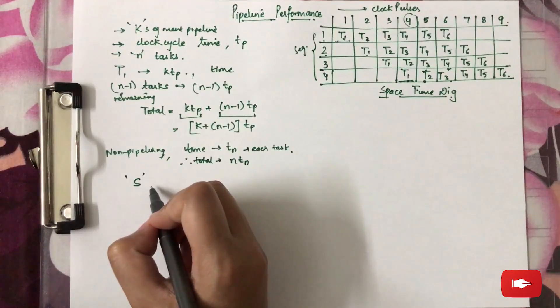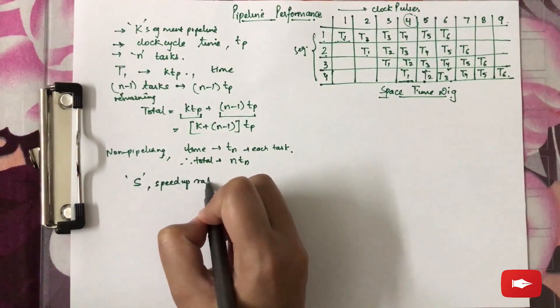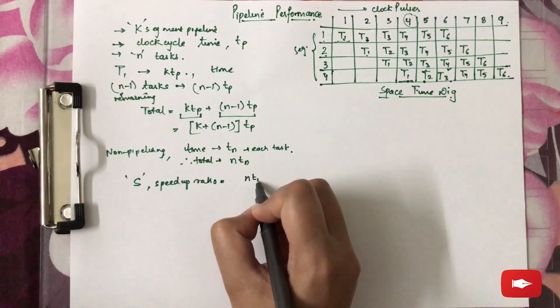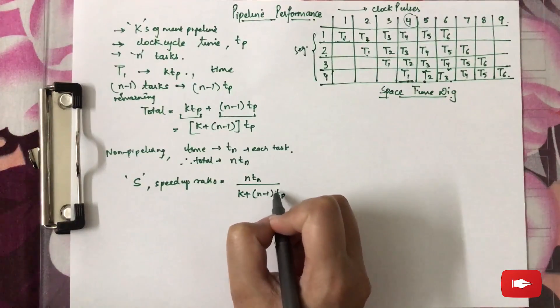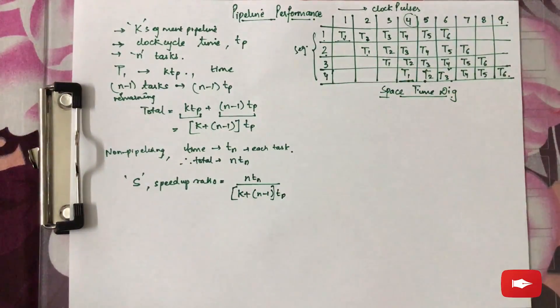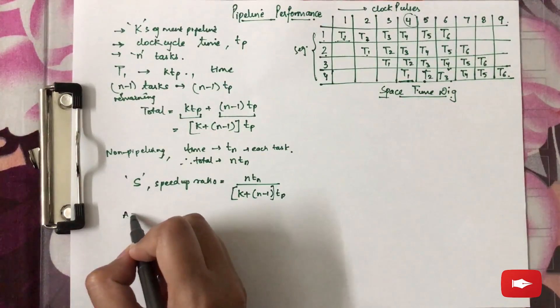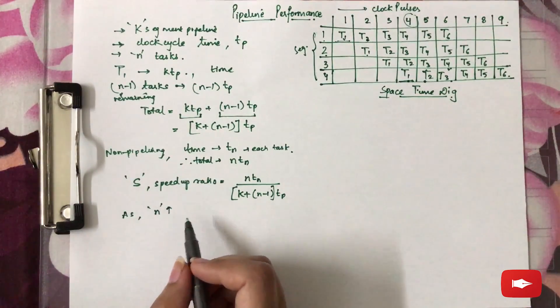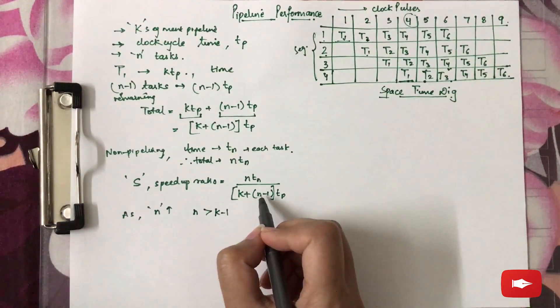Now S, capital S, which is the speed-up ratio, is the time for non-pipelining upon the time for pipelining. We get this formula. As the number of tasks increase, N will be greater than K minus 1.